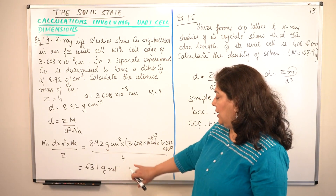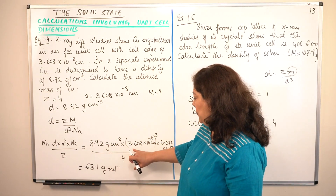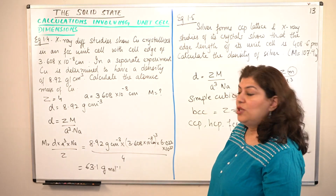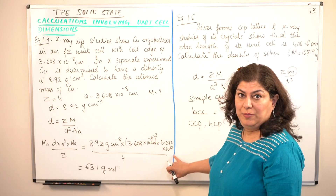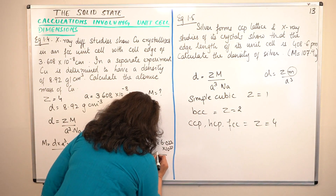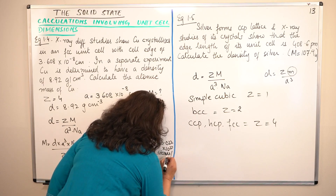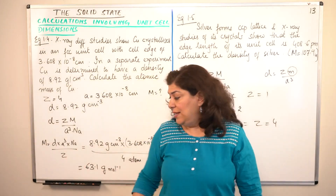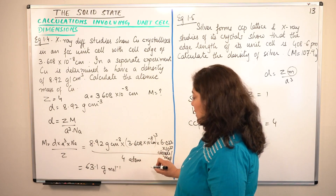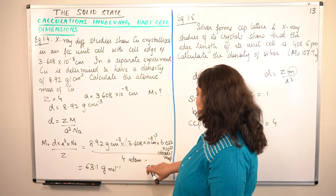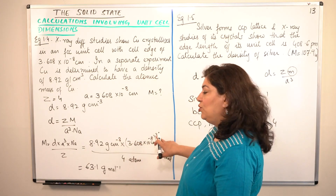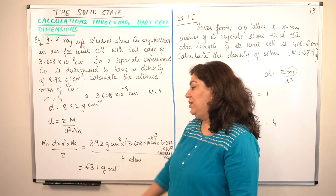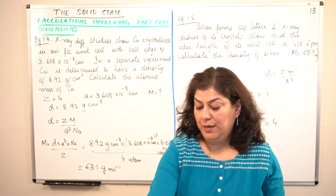Why do we get grams per mole? The density is in grams per centimeter cube; A³ gives centimeter cube in the denominator; Avogadro's number is 6.022 × 10²³ atoms per mole; and Z is 4 atoms per unit cell. Atoms cancel with atoms, per mole remains, and centimeter⁻³ cancels with centimeter cube. So the unit you are left with is grams per mole — giving 63.1 grams per mole, which is the atomic mass of copper.